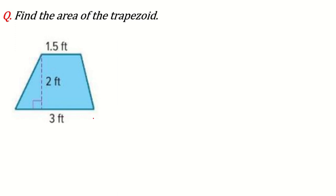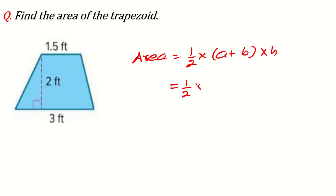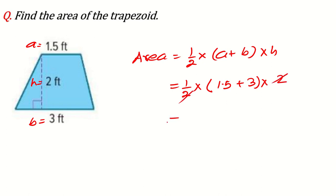Another question: find the area of the trapezoid. Area = ½ × (a + b) × h. Substituting the given values — the two parallel sides and the height — and simplifying: the 2s cancel, giving (a + b)/2 × h = 3 + 1.5 = 4.5 square feet.